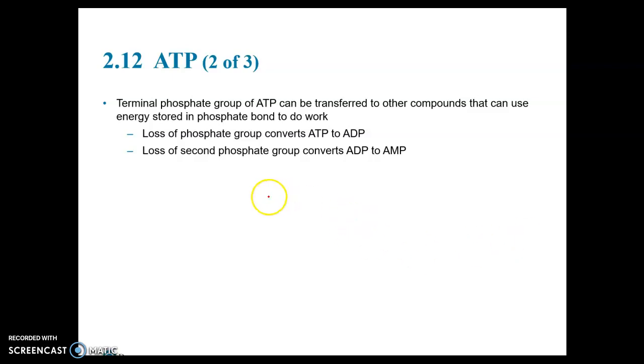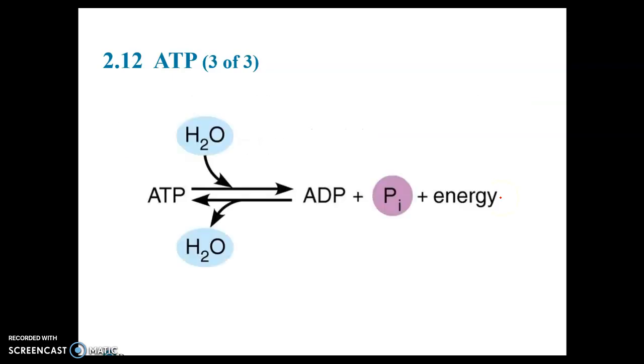The loss of a phosphate group converts ATP to ADP, adenosine diphosphate, and the loss of the second phosphate group converts adenosine diphosphate to adenosine monophosphate. Here is the reaction. In the forward reaction, when water is added, ATP releases a phosphate (that little i stands for inorganic phosphate). You end up with adenosine diphosphate, which only has two phosphate groups. The third phosphate is broken away and releases energy. That's what happens when energy is needed for the work that our cells do.